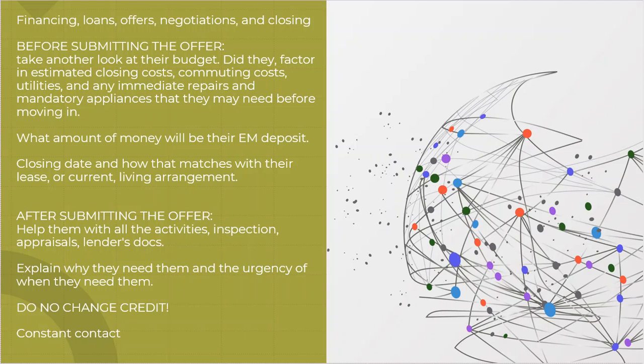After you submit the offer, there are some things you need to think about. All of these activities are going to now start taking place. You've got an inspection that's got to be scheduled. You've got appraisers that's got to be scheduled. You've got lender docs that have to be turned over. And you need to explain to them the urgency in all of this happening. Not just why is it happening, but there's also a key about urgency. When your lender says, I need last year's taxes, they need it like today, not like in 10 days when I get around to it, because every day they delay potentially could delay the closing that many days as well.